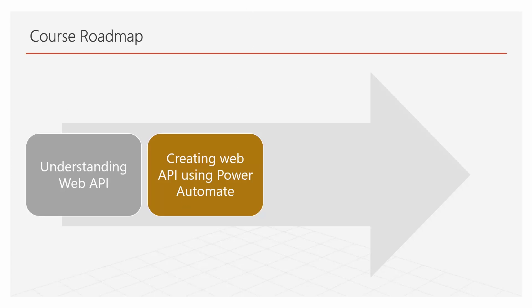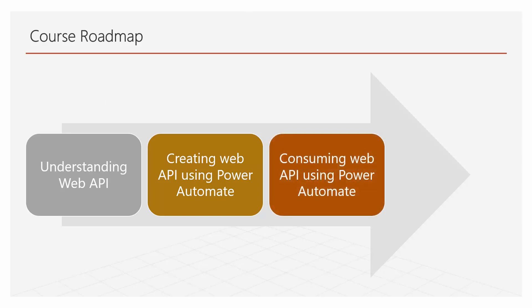After creating our own Web APIs, we take it to the next level and start consuming the APIs that other developers have built for us. Some of these web services are external, and some are developed by our own corporate developers because Flow couldn't do something and we asked them to code it for us. Regardless, we learn how to create a Web API and also how to consume one. We will also call the Web APIs that we created ourselves using Power Automate from another flow in Power Automate.